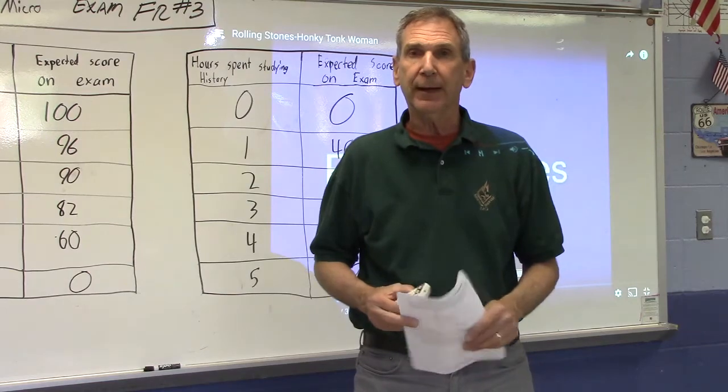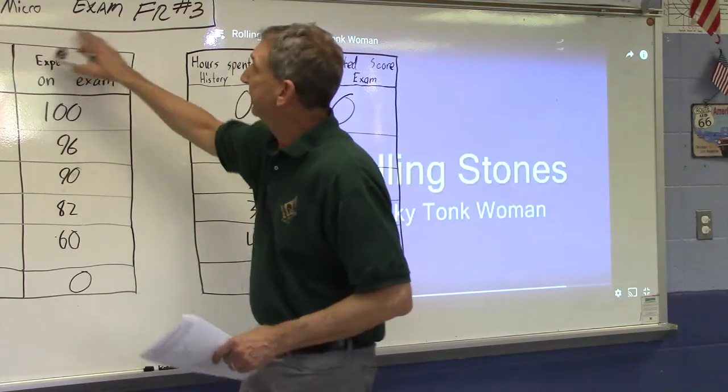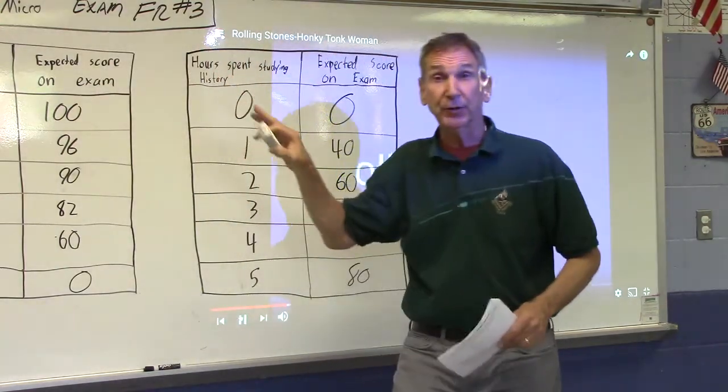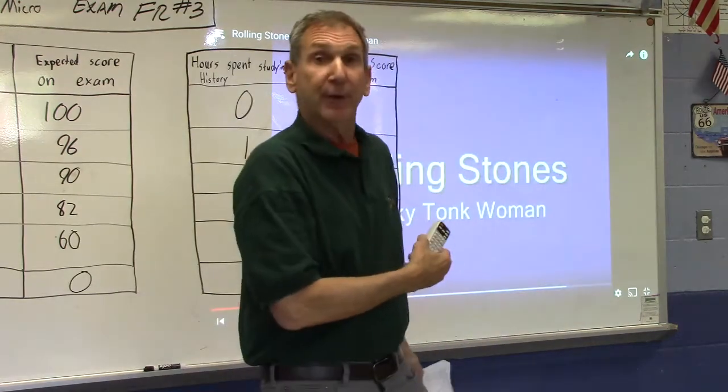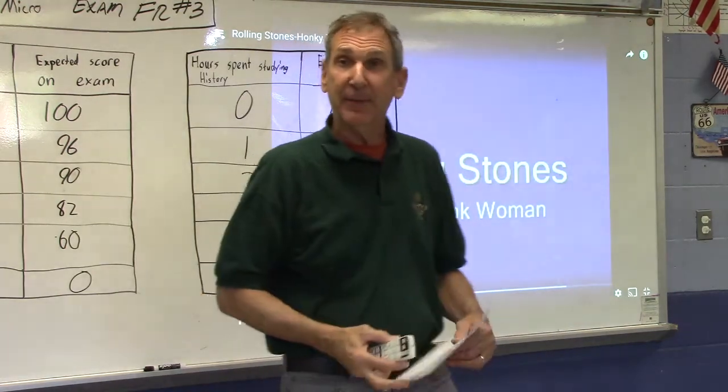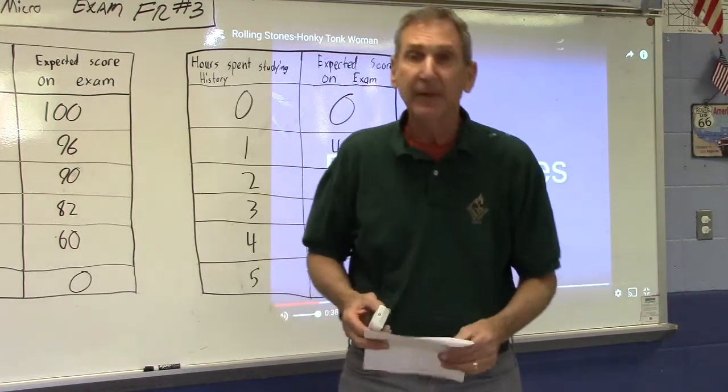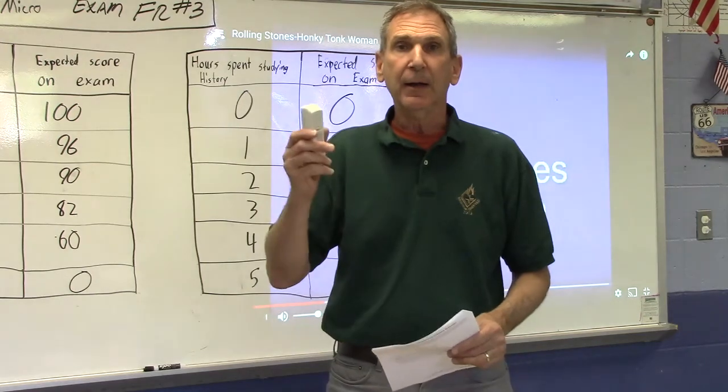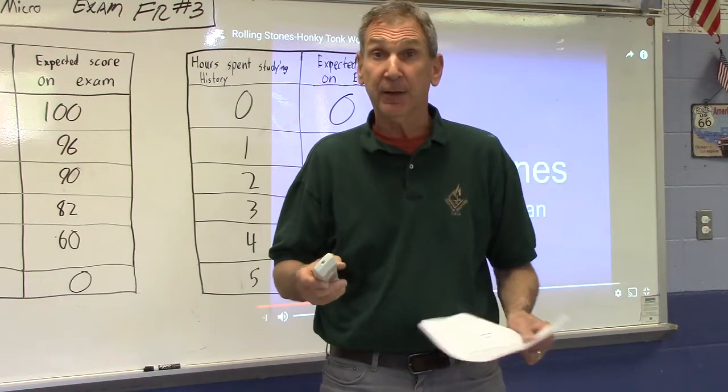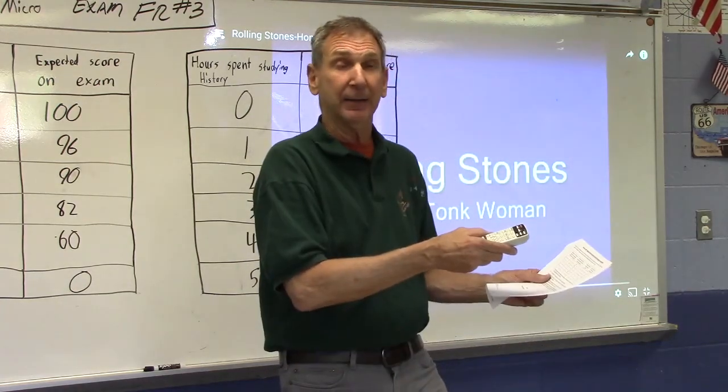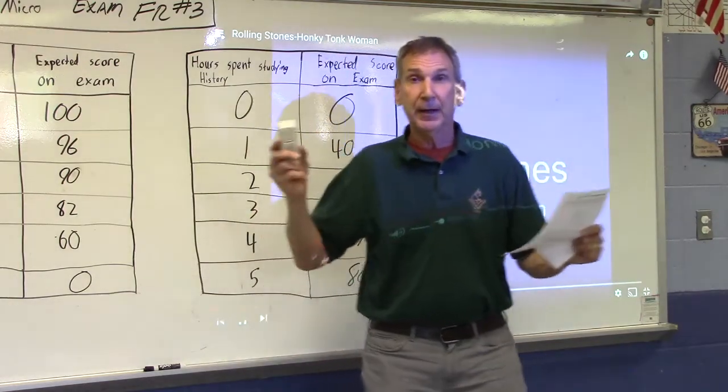Today we're going to do a review of the scoring rubric for the 2018 AP micro free response question number 3 that was taken last Friday. The song you hear in the background from Rolling Stones economics is Honky Tonk Woman and this is a question that has to do with a student named Noralia. So I'm going to have two Malcolm Trent juniors who excelled in AP economics this year. Dylan Tran and Ashton Tanavan are going to present to you the question number 3.